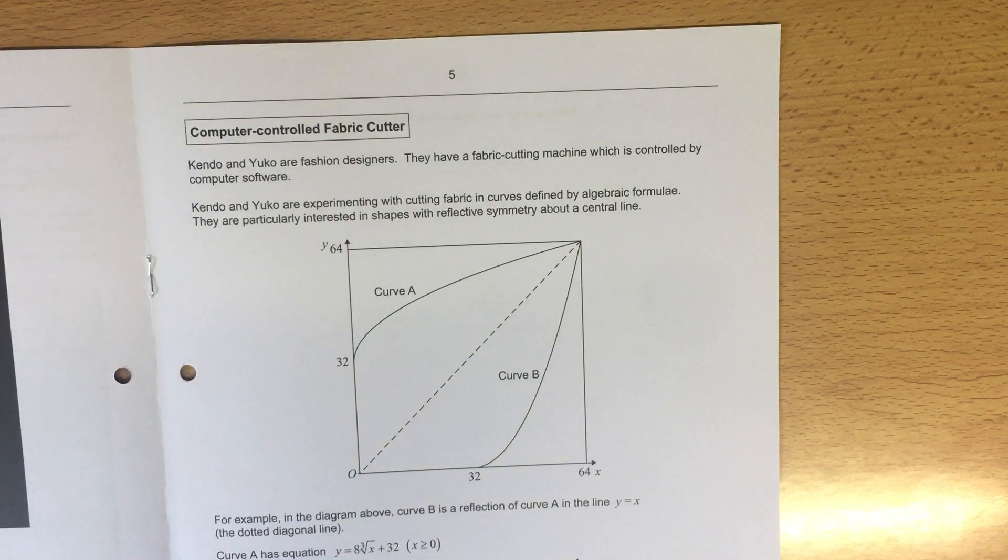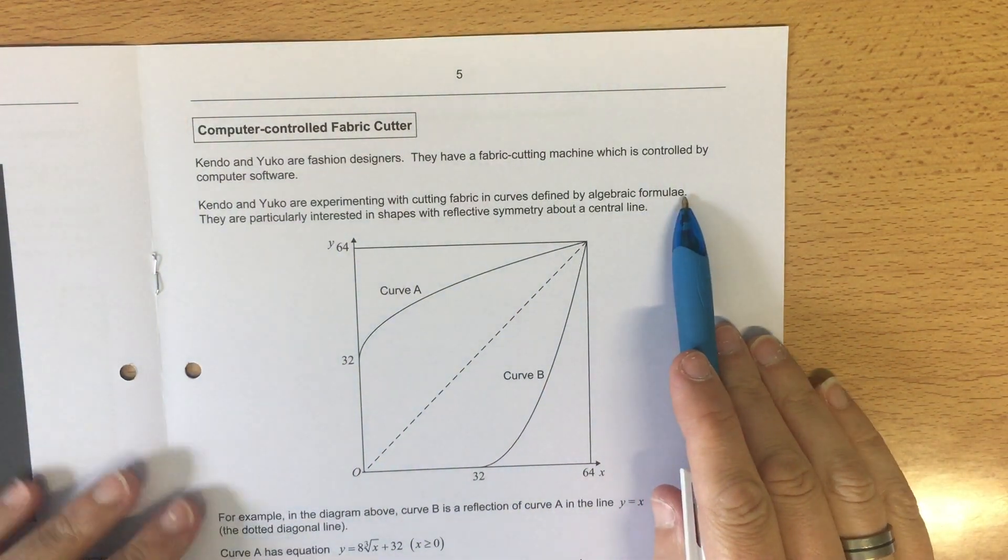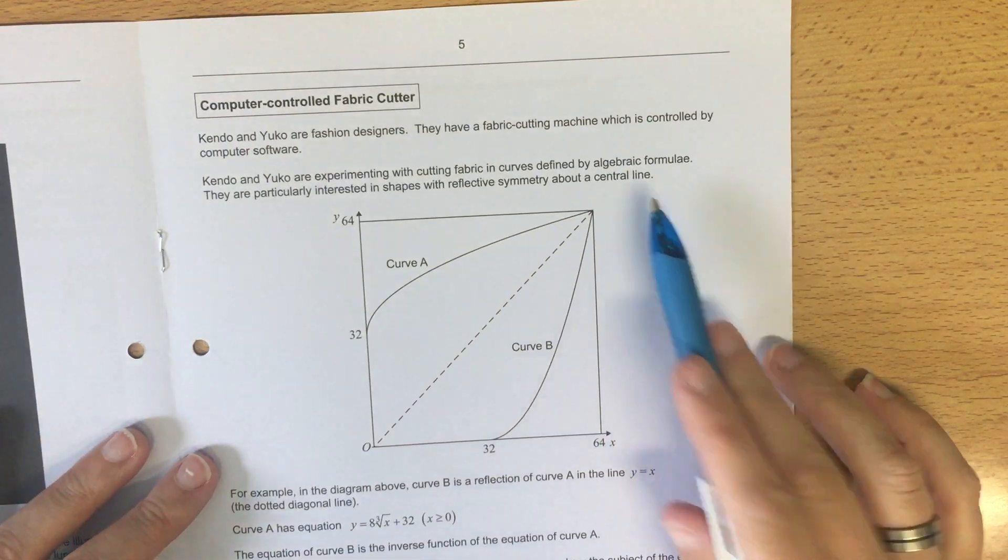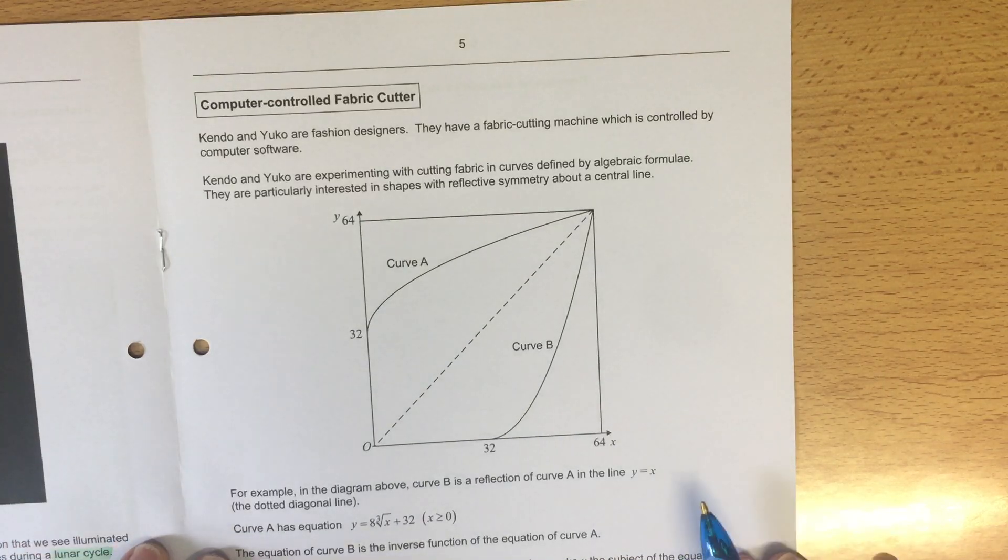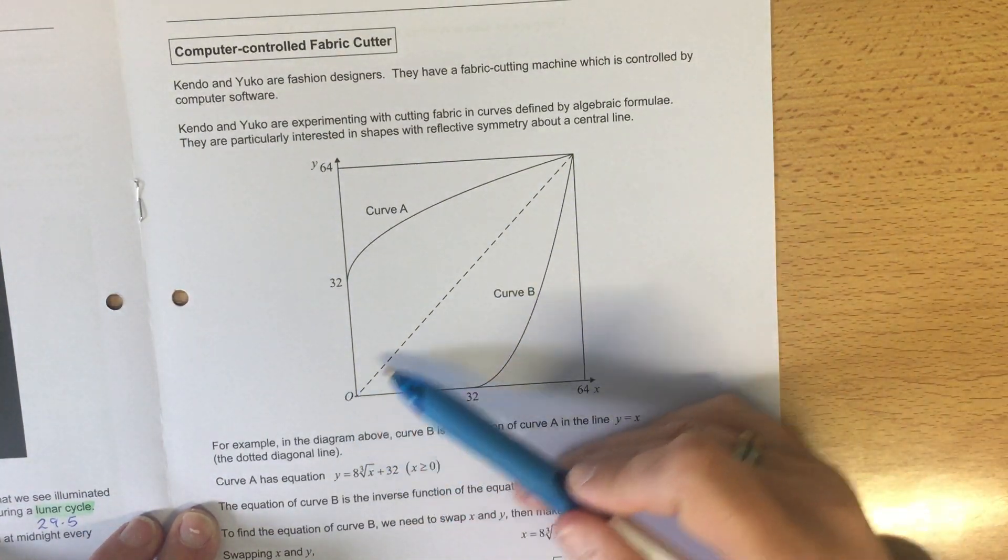Computer controlled fabric cutting. We're looking at curves defined by algebraic formulas and things with reflective symmetry about a central line. So that's going to be things that have got an inverse. This center line here is y equals x.